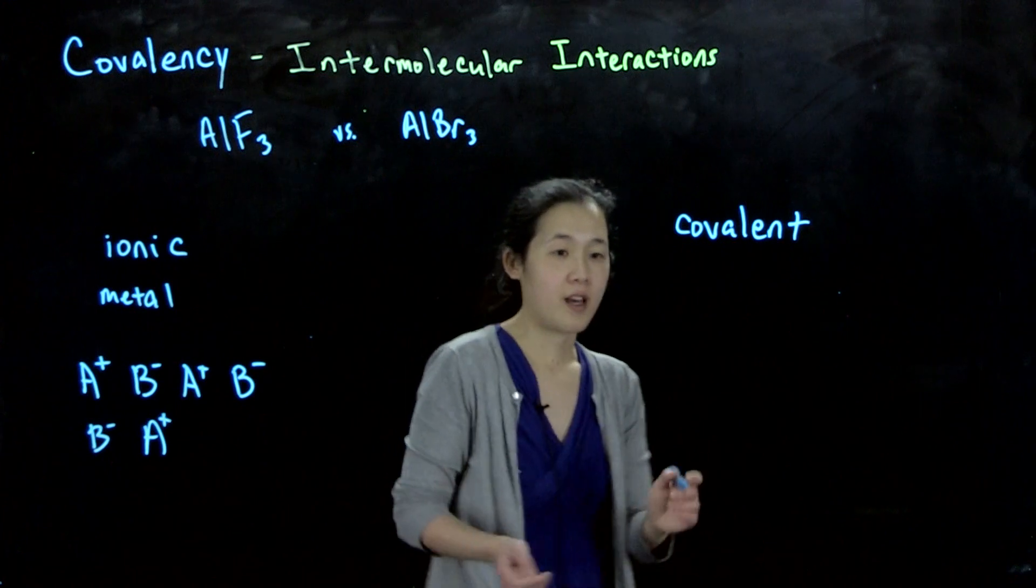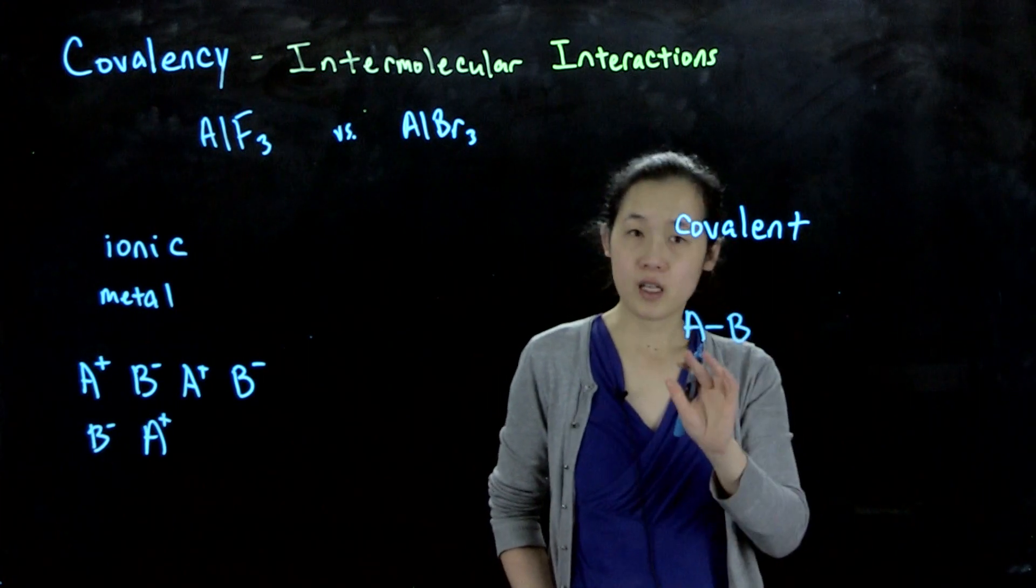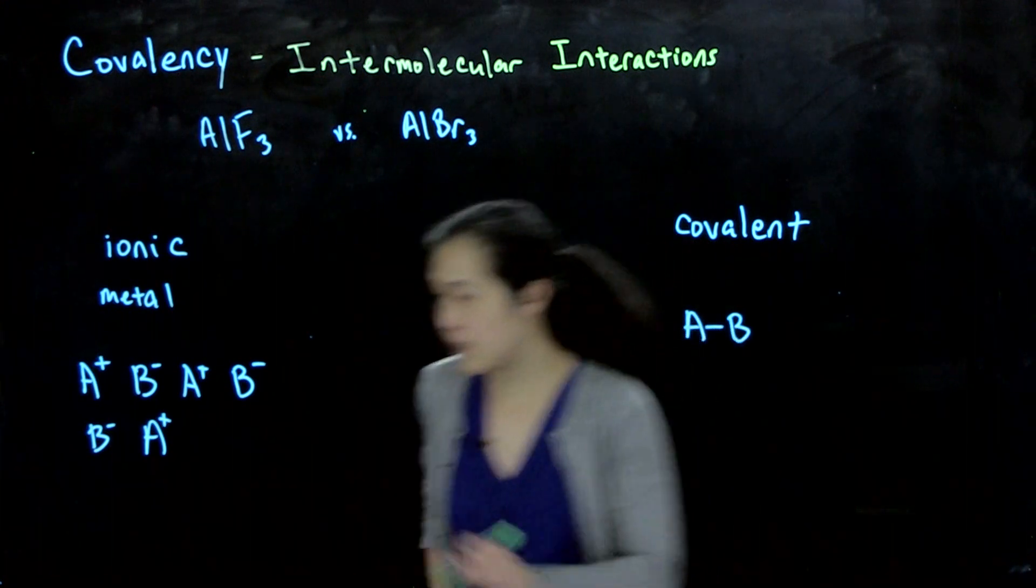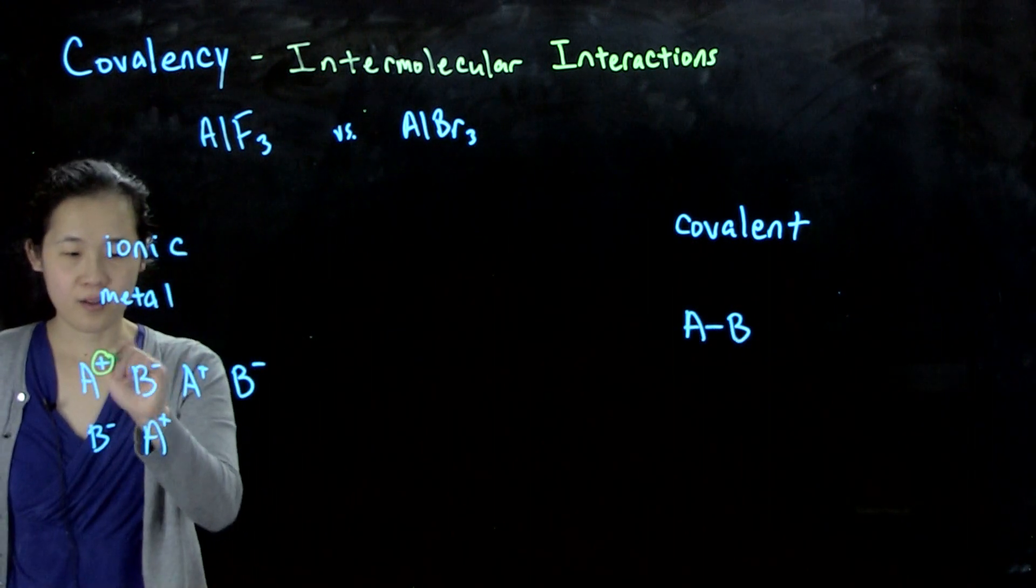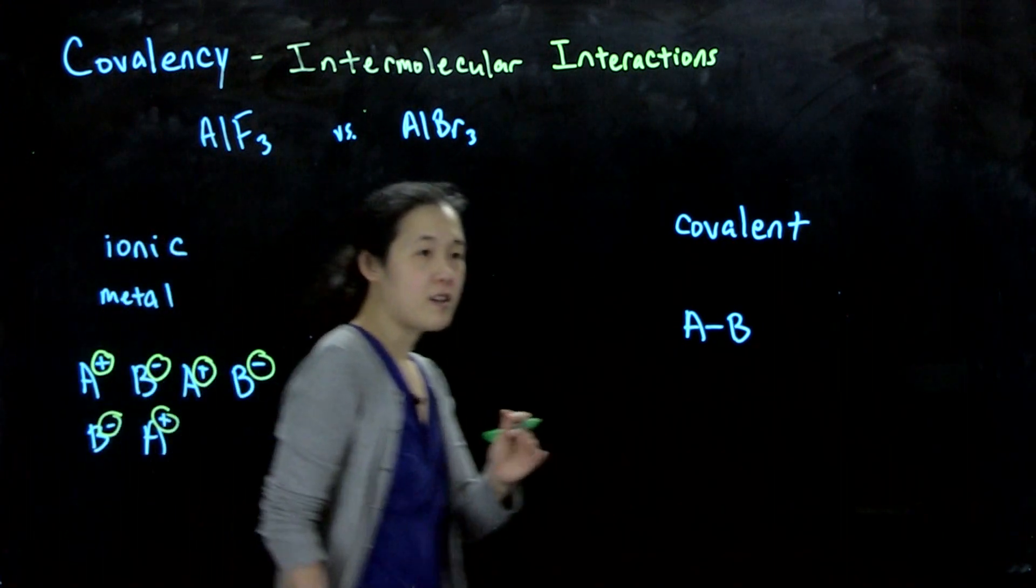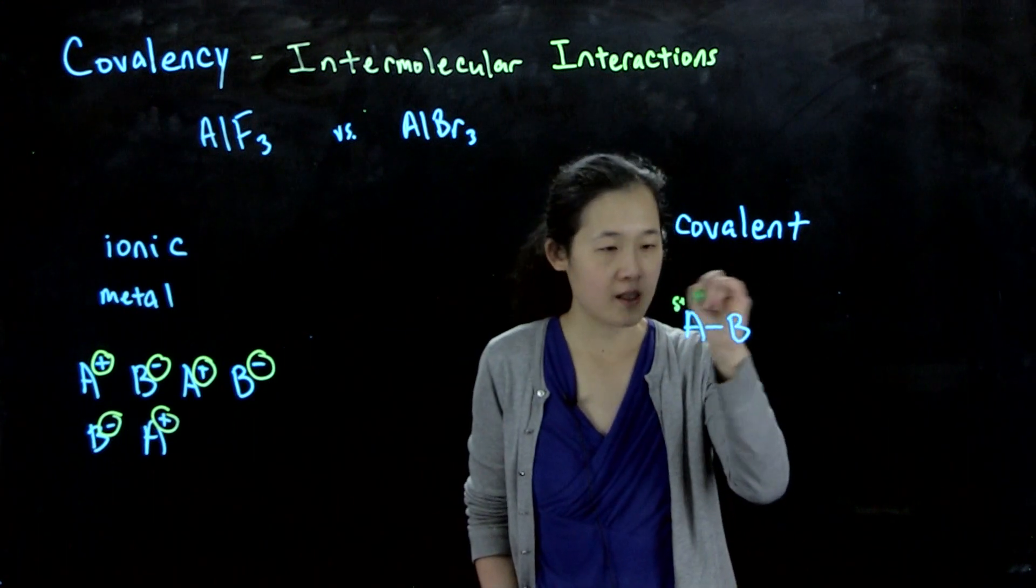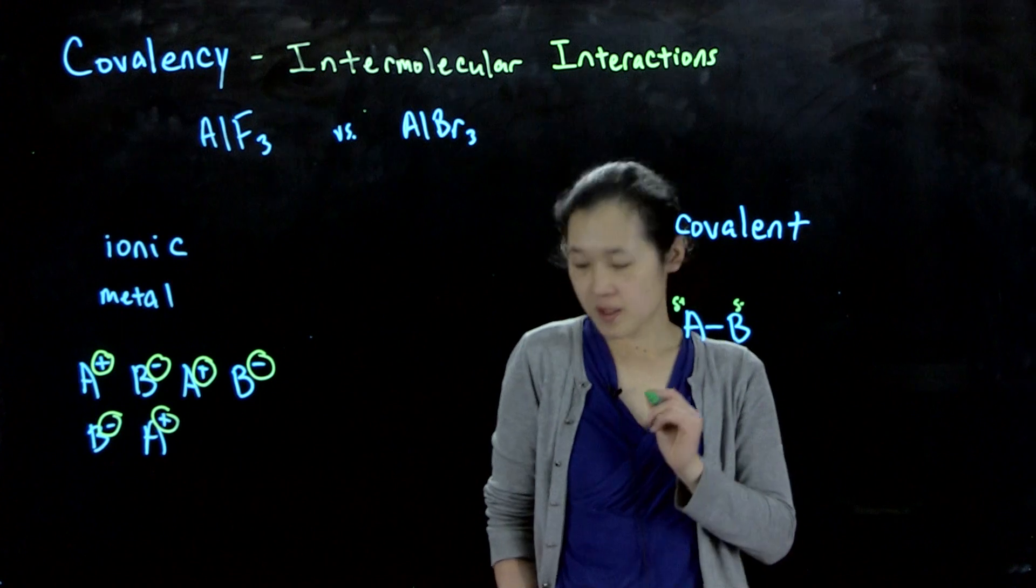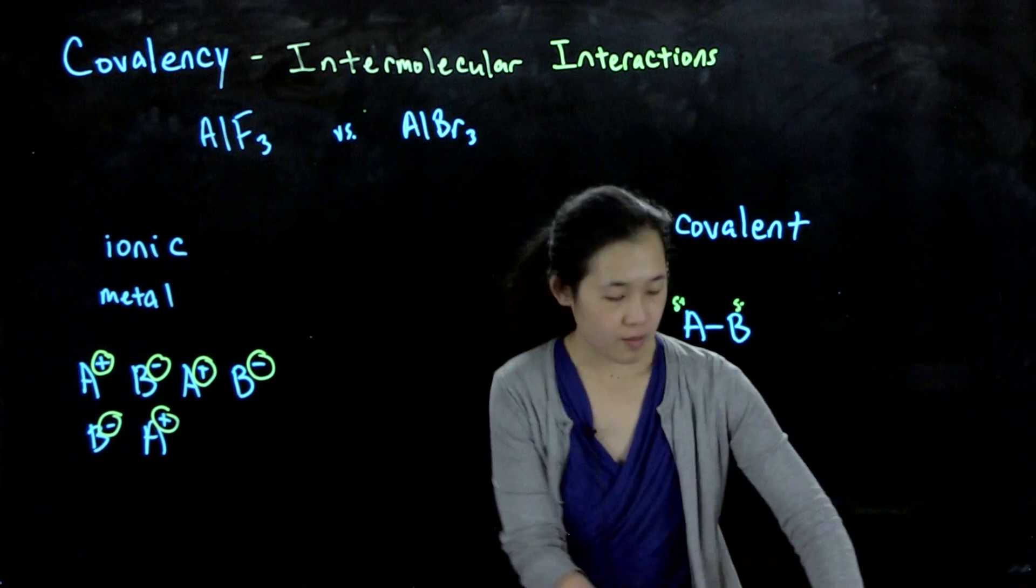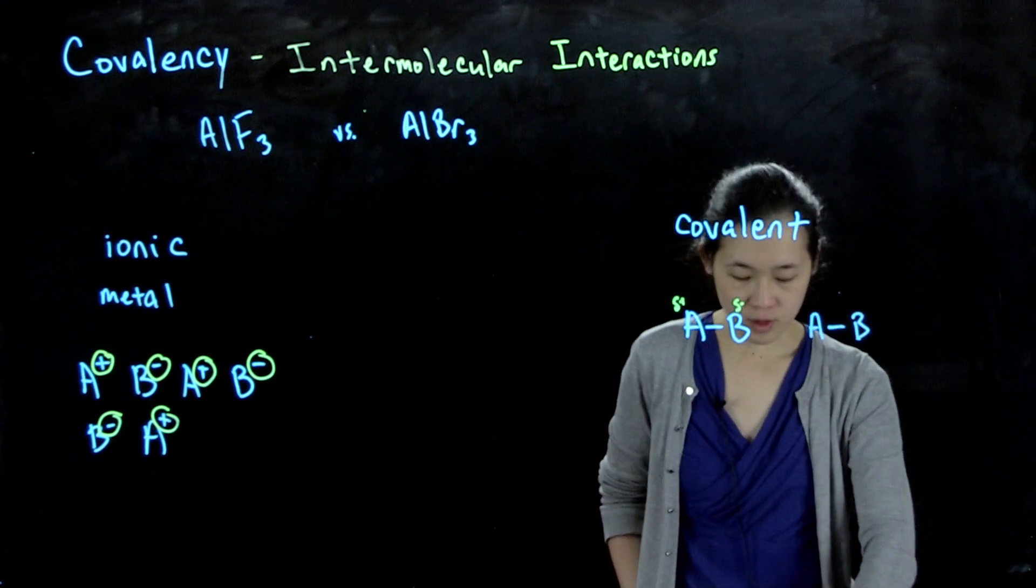In contrast, on the other end, what we have is if we have a very covalent bond. Here we're sharing electrons very equally, which means that instead of having our very localized charges, if anything a polar covalent bond, we only have these small delta plus and small delta minus. Then an intermolecular interaction with a neighboring molecule, we might still be somewhat polar.